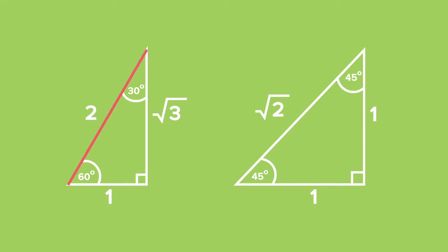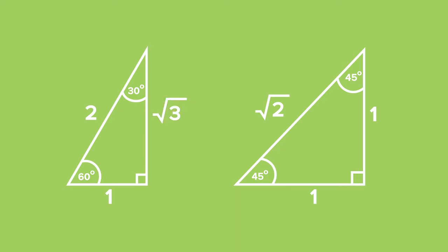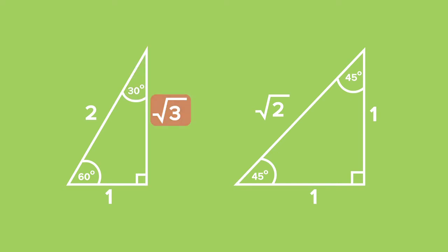We see that our hypotenuse has a length of 2. If we're working from angle 60 degrees, then the adjacent side will be 1, and the opposite side will be the square root of 3. If we work from the angle 30 degrees, the side adjacent to 30 degrees would be the square root of 3, and the opposite side of the angle 30 degrees will be 1.